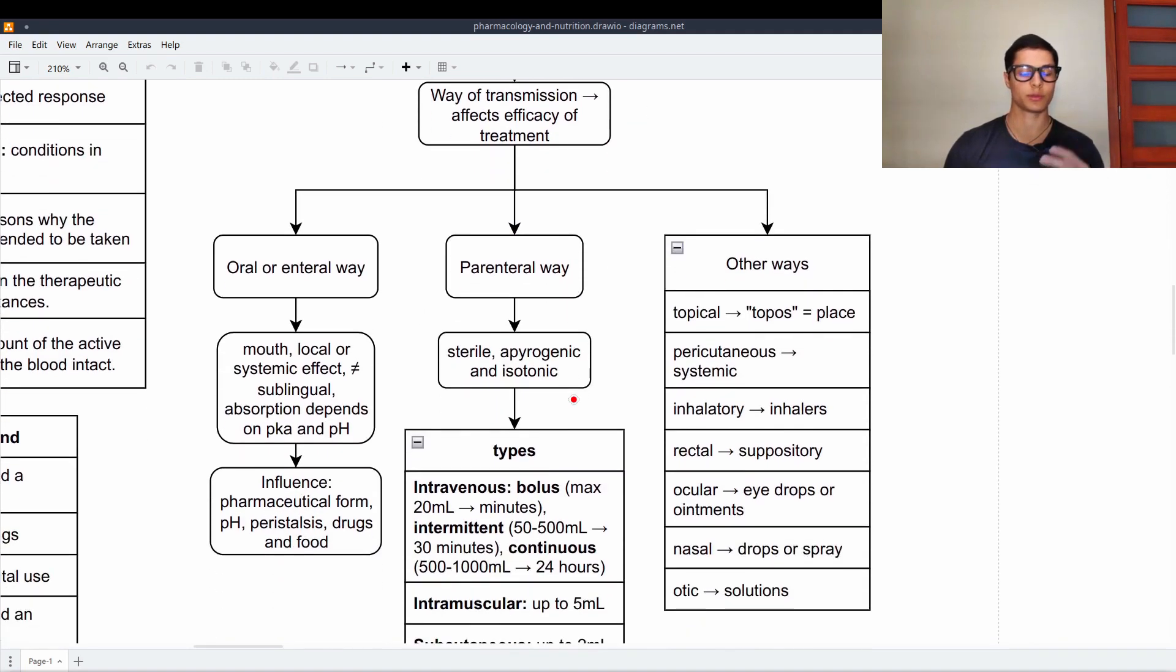Way of transmission affects efficacy of treatment. We have different ways of giving the drug. We have the oral or interior way which is through mouth, local or systemic effect and is not equal to the sublingual because in the sublingual there is an absorption in the mouth and it goes straight to the bloodstream and it also depends on the pKa and the pH. Then the influence is pharmaceutical form, the pH, the peristalsis, the drugs and the food.